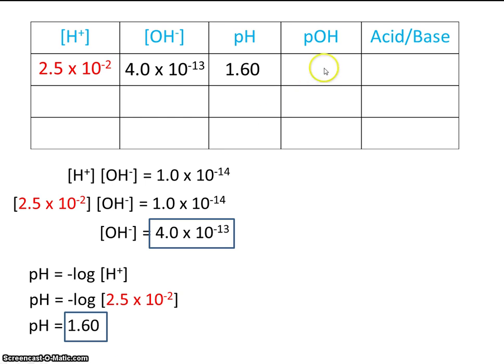Now we have an equation for pOH. It's this here. So let's plug in what we know. We know the pH. It's 1.6. And we know that the sum of the pH and the pOH is always 14. So let's just solve algebraically. And our pOH is 12.40.